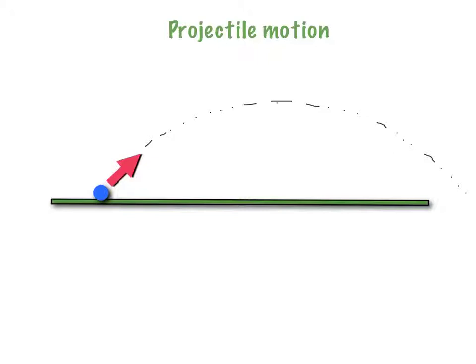What a better way to practice than solving a problem. So let's imagine that this ball has a mass of 0.5 kilograms. And that the person who kicked the ball did it at an angle of 35 degrees. So this is the angle described between the trajectory or the vector velocity and the horizontal. And the velocity at that particular angle is going to be 8 meters per second.